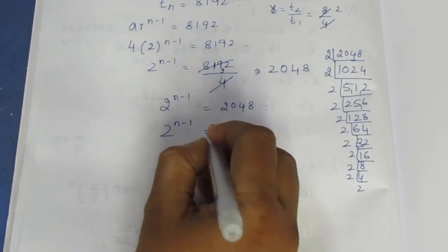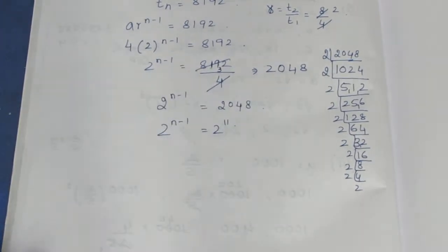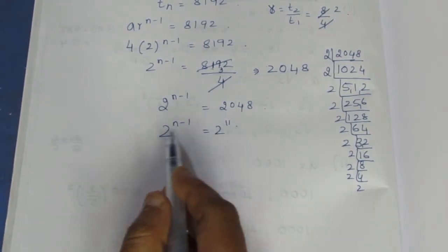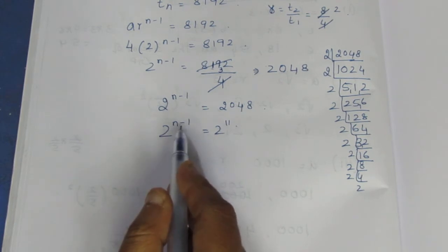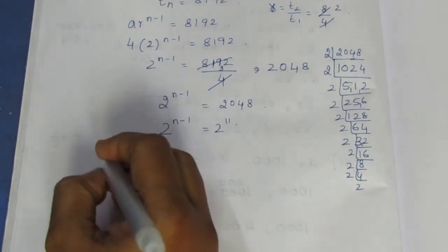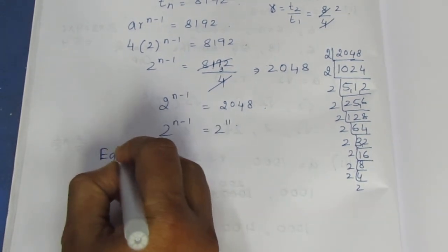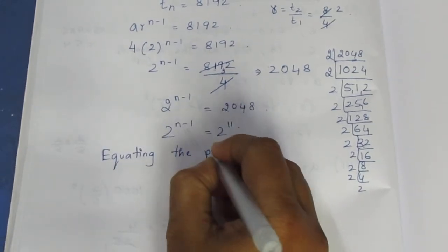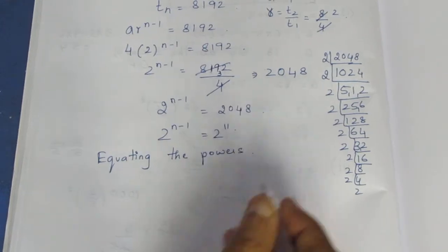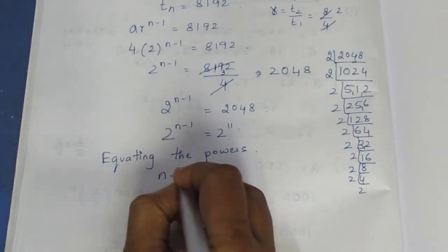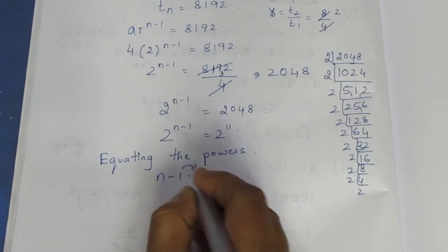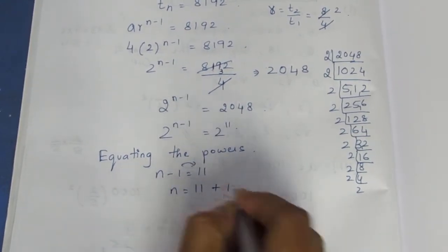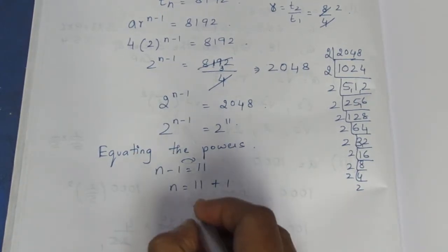This is 2 to the power 11. Now the base is the same. If the base is the same, we equate the powers. Equating the powers: n minus 1 equals 11. So n equals 11 plus 1, which gives n equals 12. The number of terms is 12.